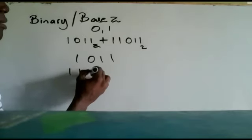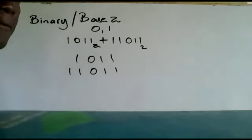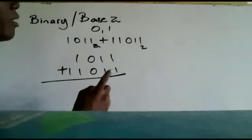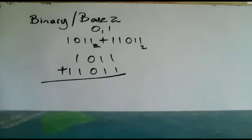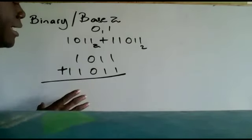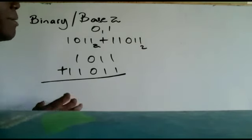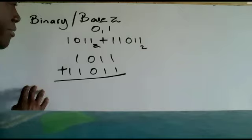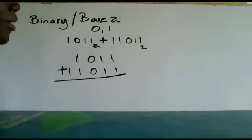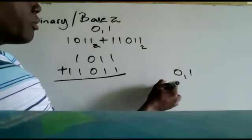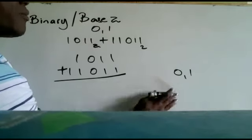My intention here is not just to give rules, but for you to understand the process. We're dealing with base 2, so the digits we can write are 0 and 1. As soon as we have two of anything, it becomes one set of two. That set of two carries to the next column, which is two times the current column.